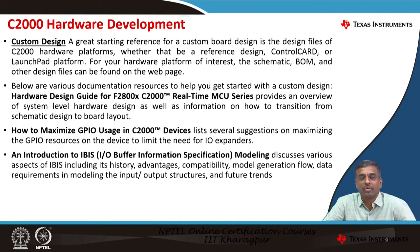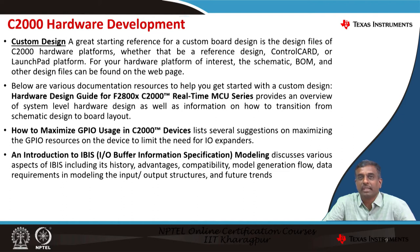There is a lot of support available on the web to build your own custom design. For example, the hardware design guide for F2800X C2000 real-time MCU series provides an overview of system-level hardware design as well as information on how to transition from schematic design to board layout. Additionally, there is guidance on how to maximize GPIO usage in C2000 devices, listing several suggestions on maximizing GPIO resources to limit the need for IO expanders. We suggest that you start with some of our hardware reference designs and slowly migrate them toward your requirements.